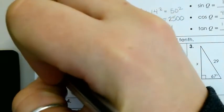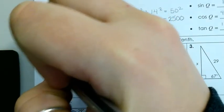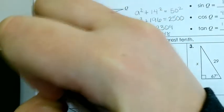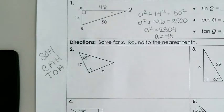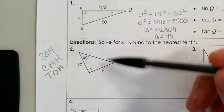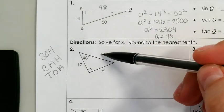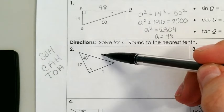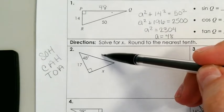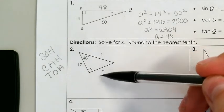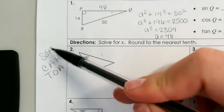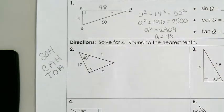We have X, and we need to determine which function is going to help us. Do we have the hypotenuse here? No, we don't, and we can't figure it out because we don't know X. So therefore, sine and cosine are out of the question.